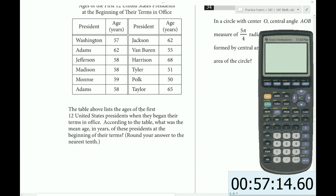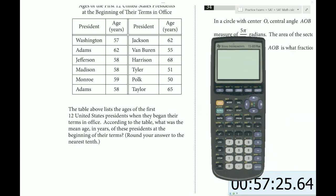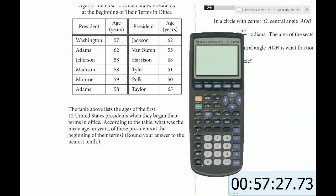The table above lists the ages of the first 12 United States presidents when they first began their terms of office. According to the table, what was the mean age in years of these presidents at the beginning of their terms? For this one, we're going to need the calculator.